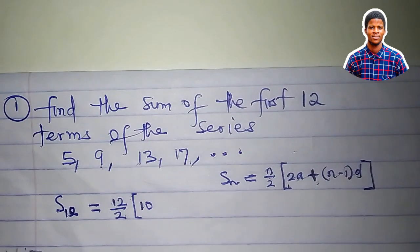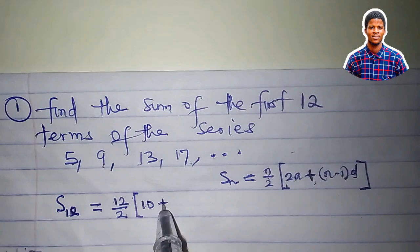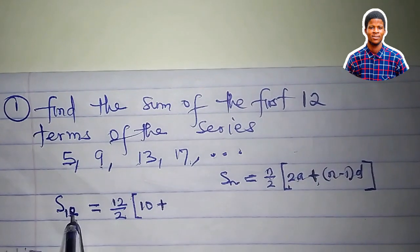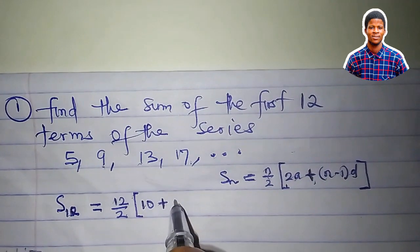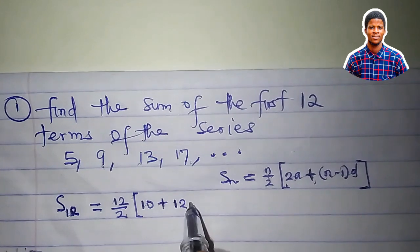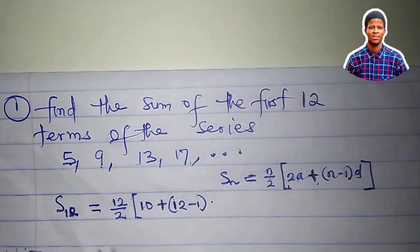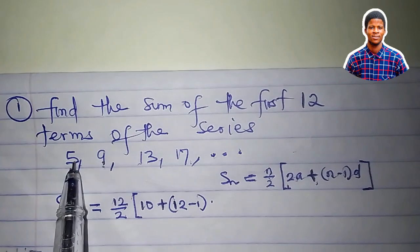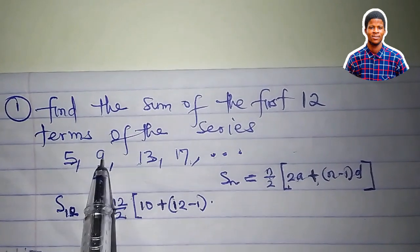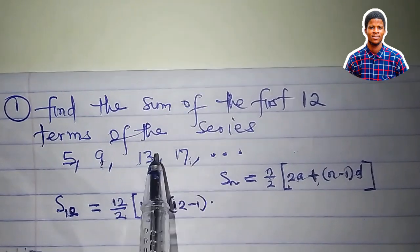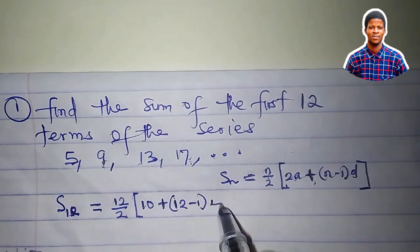plus n is 12, minus 1 times d. What is d? The common difference. 9 minus 5 is 4, 13 minus 9 is 4, 17 minus 13 is 4. The common difference is 4.